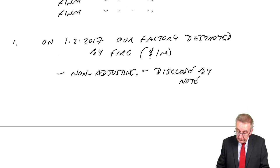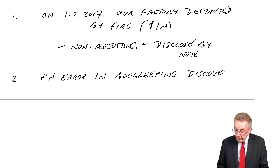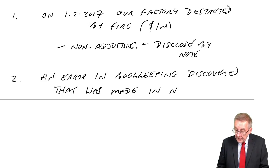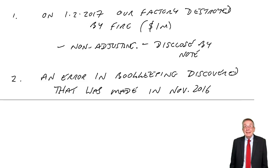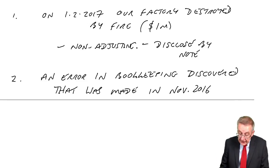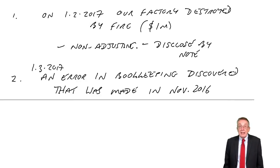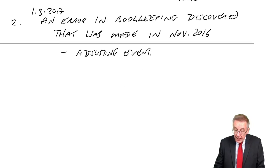Next example: an error in the bookkeeping was discovered. It was made in November 2016. Would you change the accounts? Well, of course you would. We didn't discover it until the 1st of March 2017 — that's when we discovered it. But were things correct at the end of December? No, they weren't, because there was a mistake in November. It's an adjusting event.